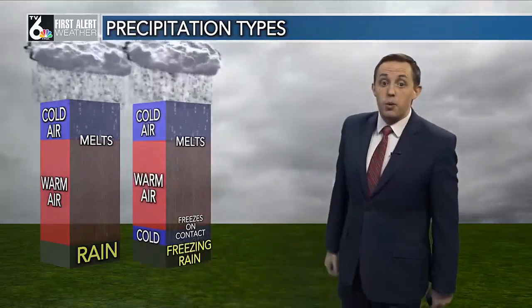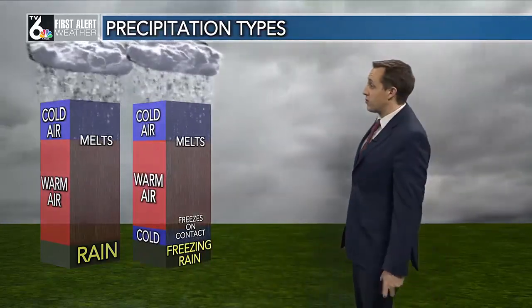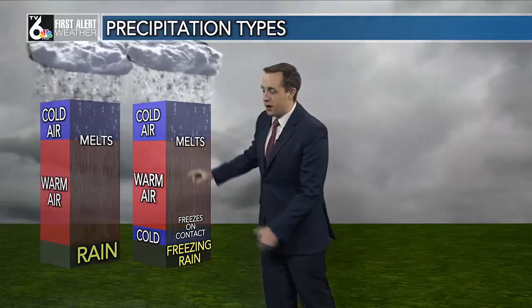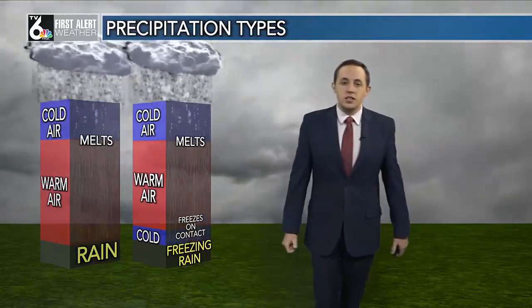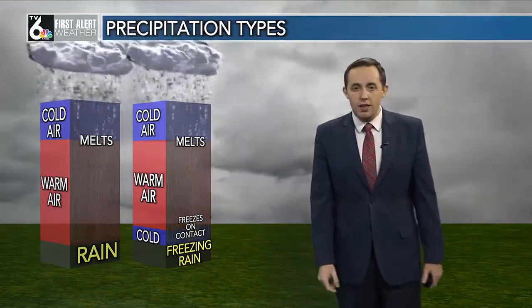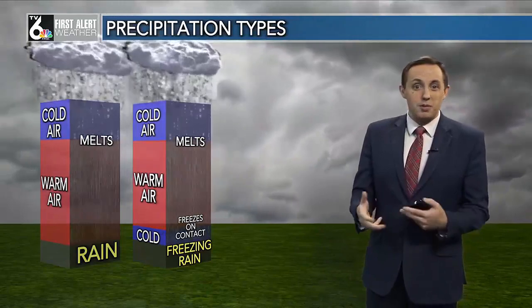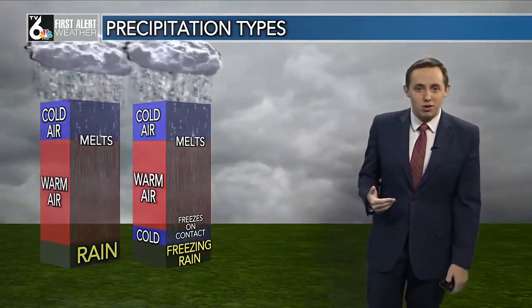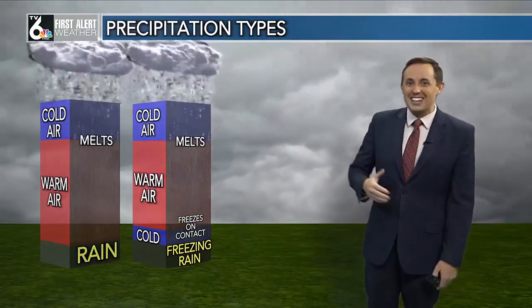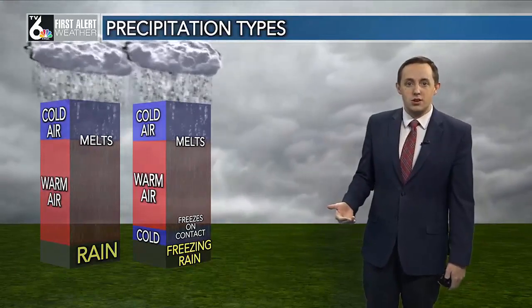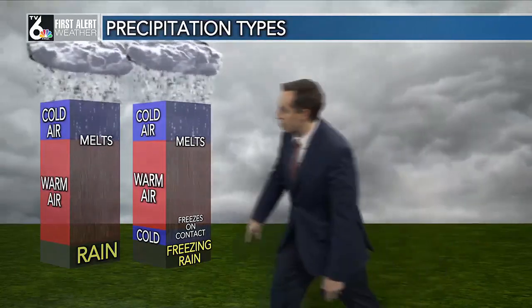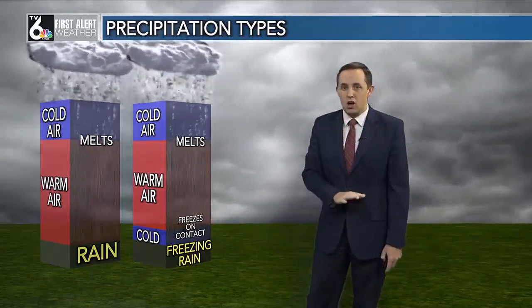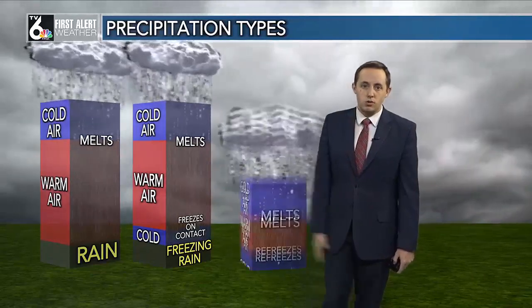That pretty much makes sense. But when you talk about freezing rain, we've got that thicker layer of warm air, but a very shallow layer of below-freezing air at the surface — maybe just a couple thousand feet above us. Temperatures could be below 32 degrees, but it doesn't have time to refreeze into sleet or snow. So it actually stays as rain, but freezes on contact. And that's what can cause a whole lot of issues on the roads.